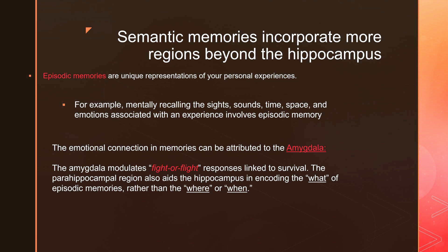Any type of very scary event you probably remember pretty well. The amygdala is the part of our brain that modulates the fight-or-flight response — whether you should stand up and fight or run away to save yourself. The parahippocampal region also aids the hippocampus in encoding the 'what' of episodic memories, rather than the 'where' or 'when.'